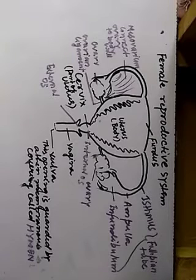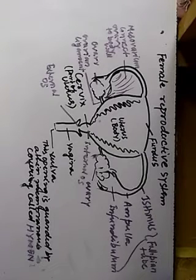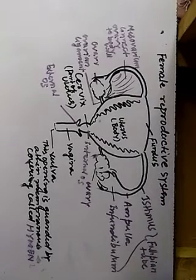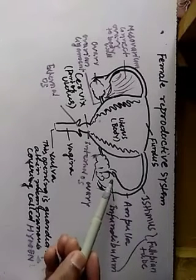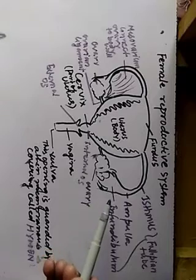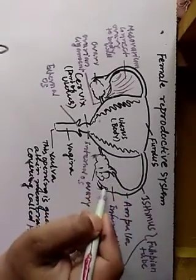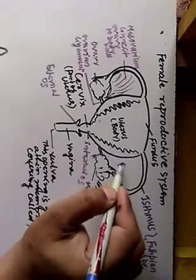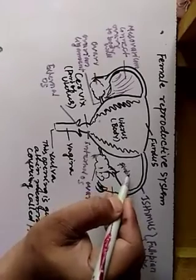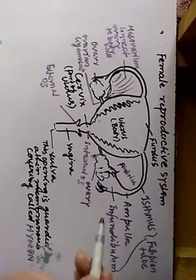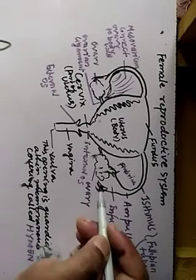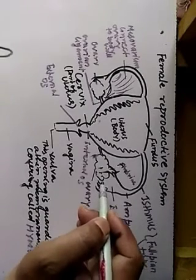Now let's understand the fallopian tube. The first part of the fallopian tube is the infundibulum — a broad funnel-like structure. You can see the broad funnel-like structure here. After the infundibulum, there are finger-like projections called fimbria. These fimbria suck the ovum when it is released by the ovary.